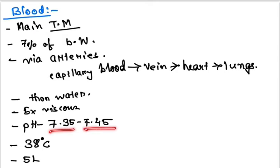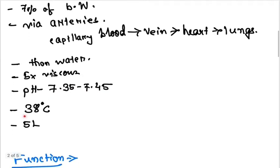Blood is more dense and viscous than water. pH lies between 7.35 to 7.45, temperature is around 38 degrees Celsius, and you have 5 liters of blood in the body.